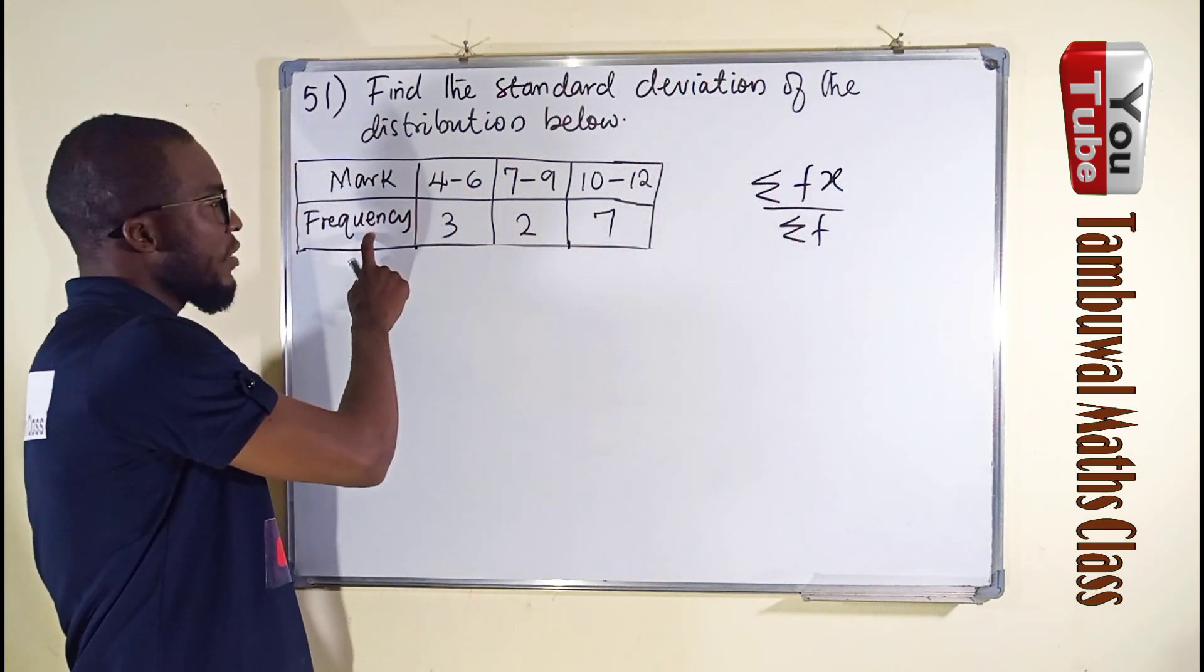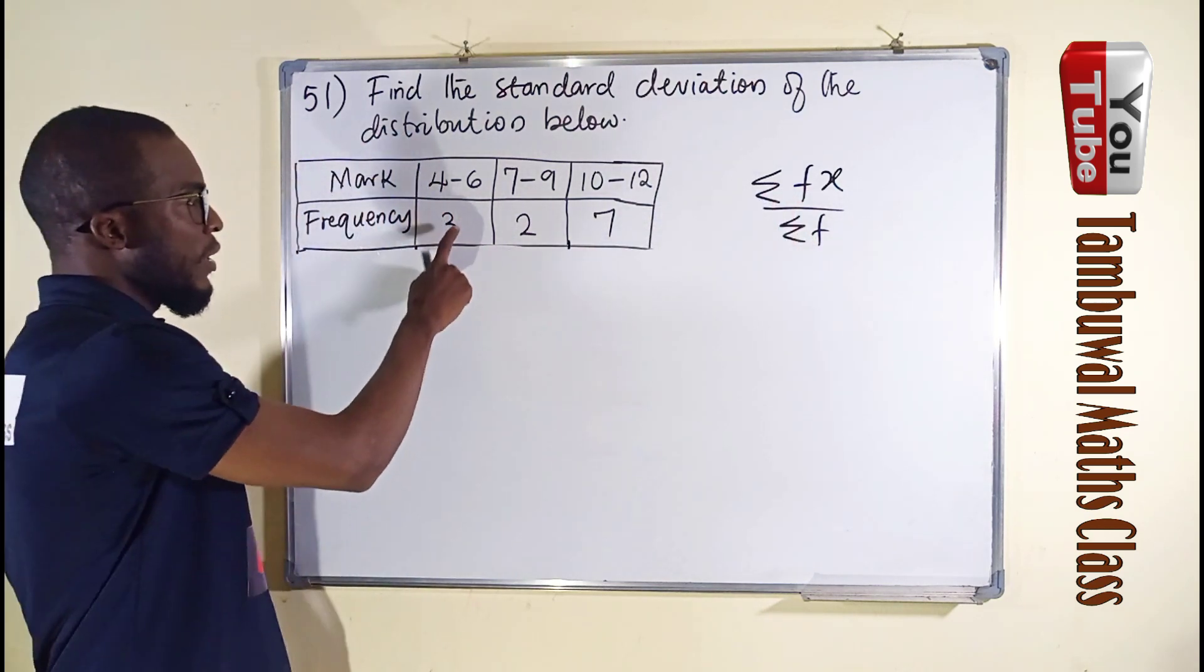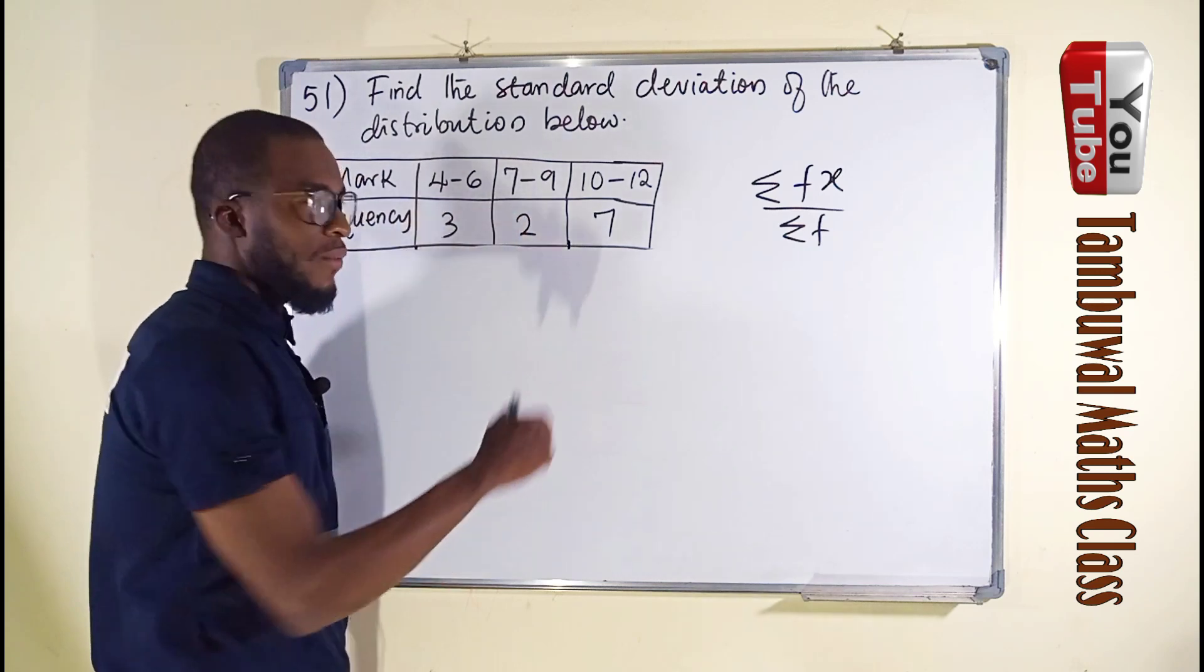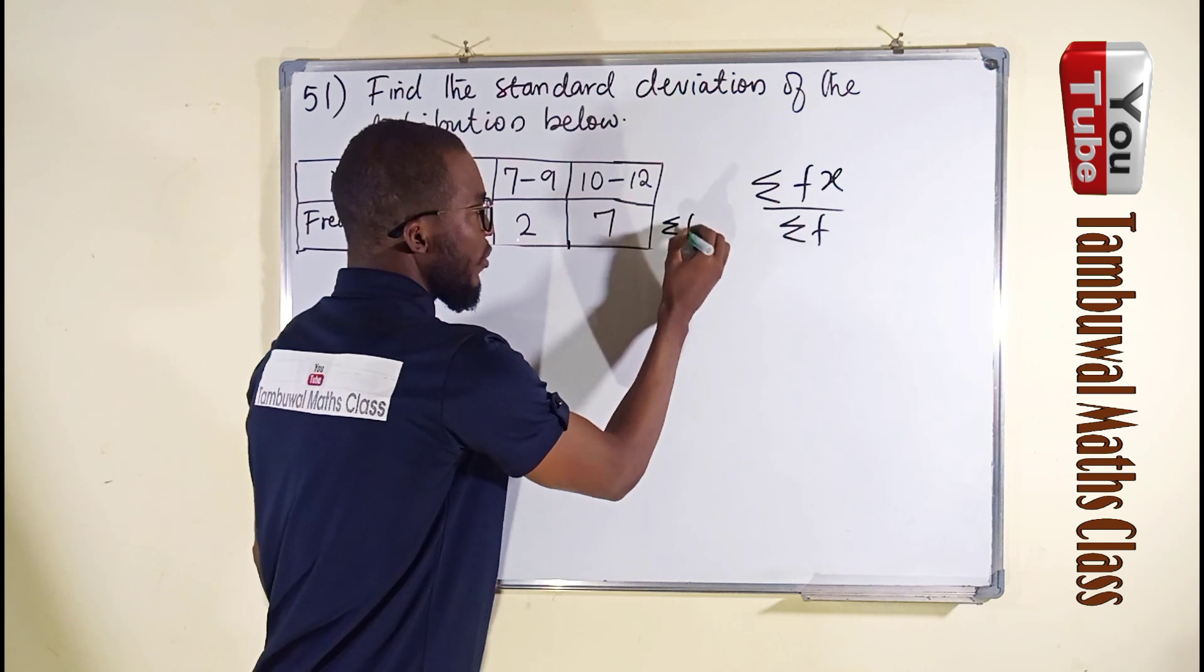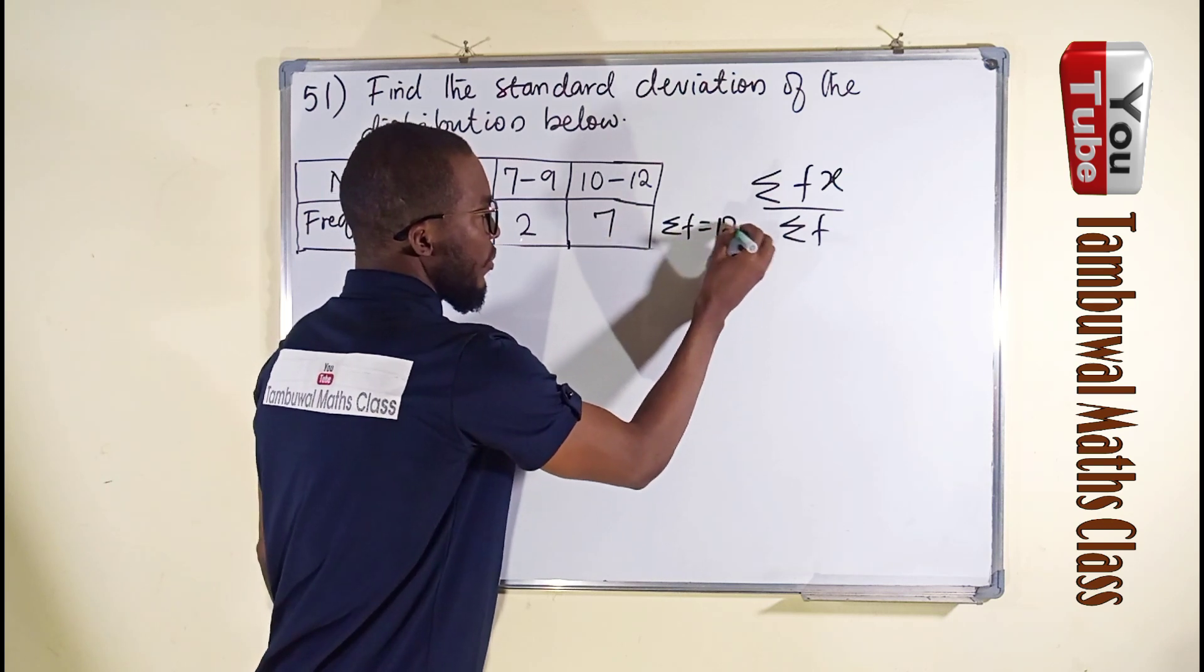Frequency is given from the question. You can see it here. We are going to take the sum. 3 plus 2 is 5, plus 7 is 12. So we have the sum here. Sum of the frequency equals 12.